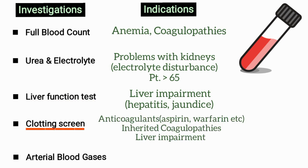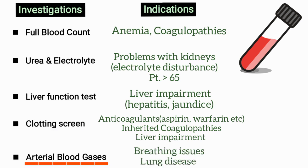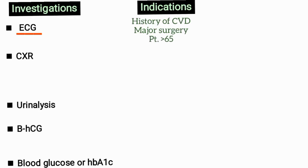A clotting screen is done for patients on anticoagulants like aspirin or warfarin, or with inherited coagulopathy or liver impairment, because these need to be corrected before surgery. Arterial blood gases are done in patients who have or are suspected to have breathing issues or lung disease.